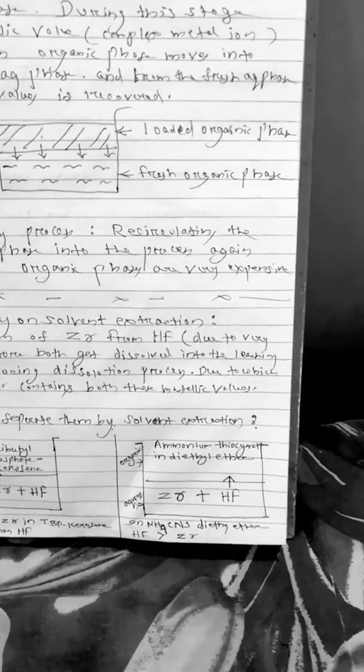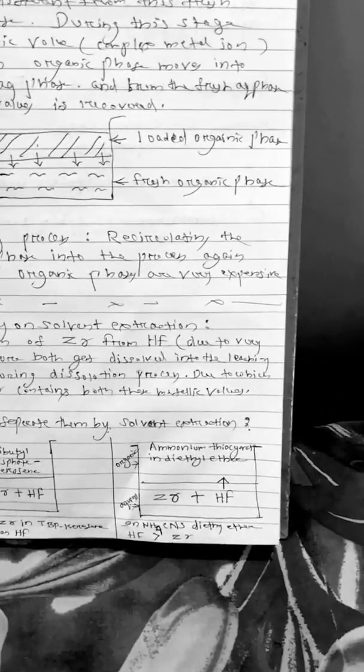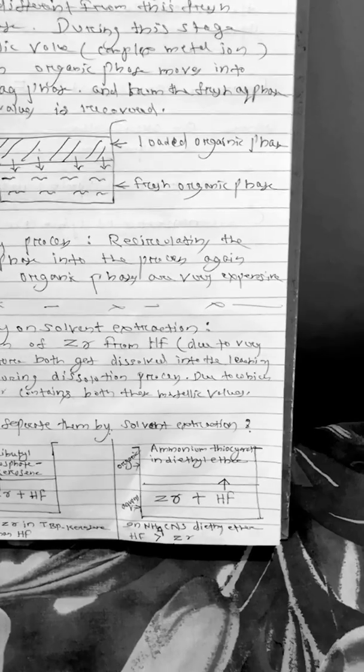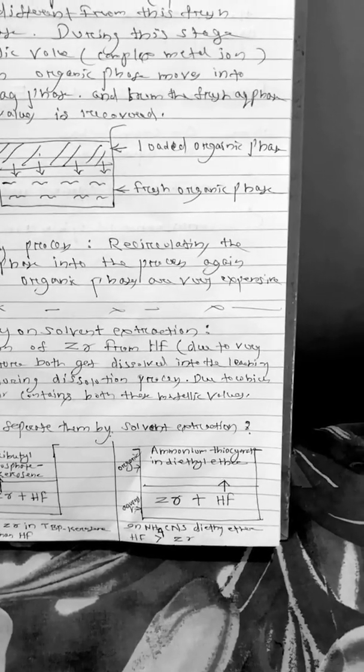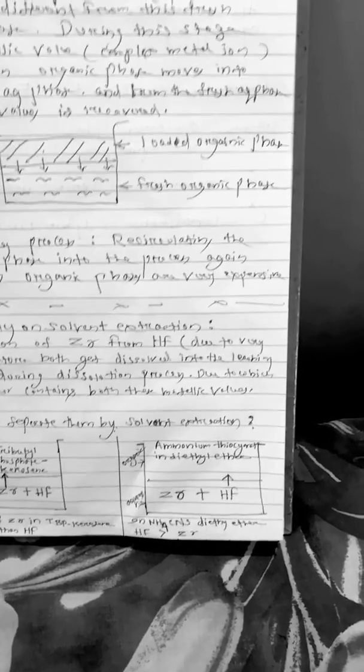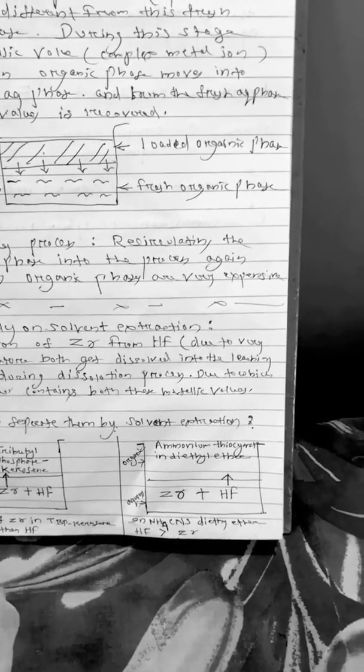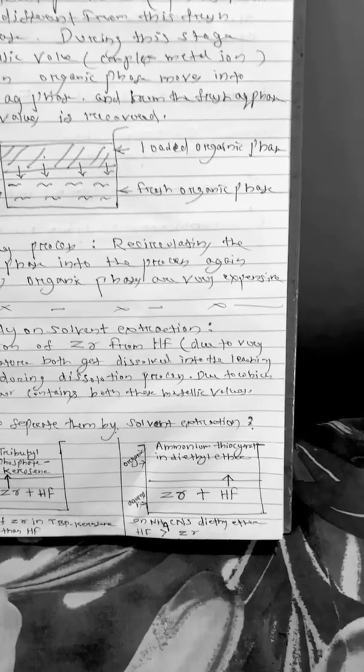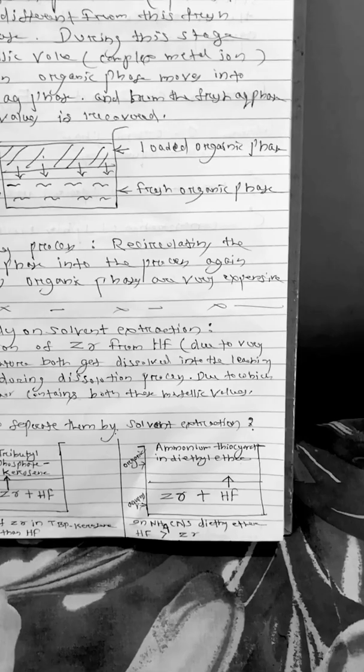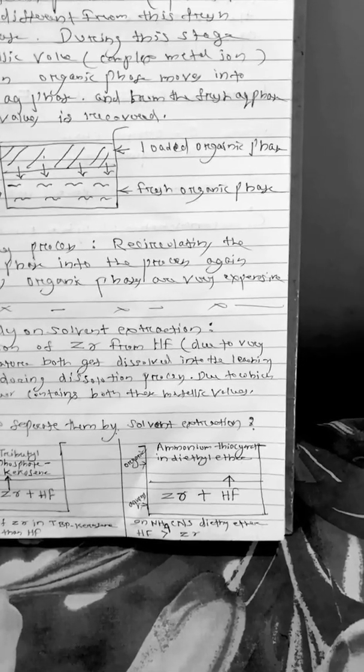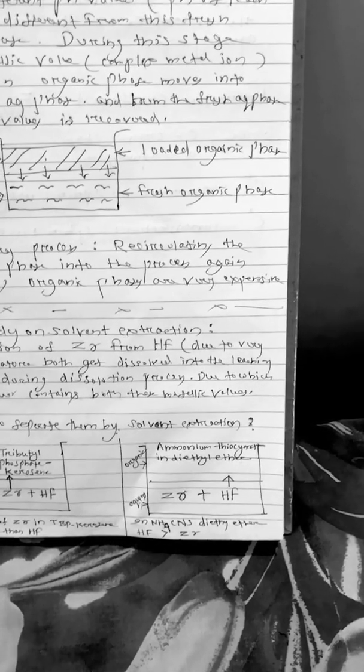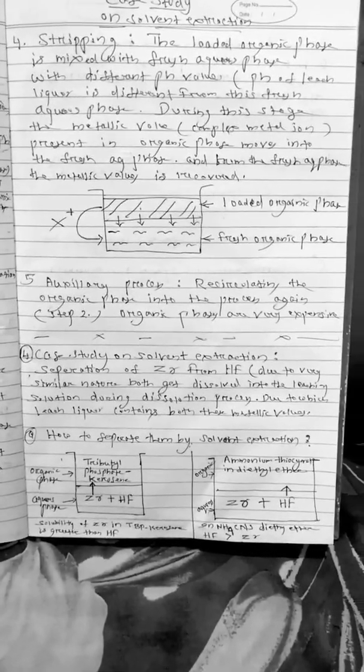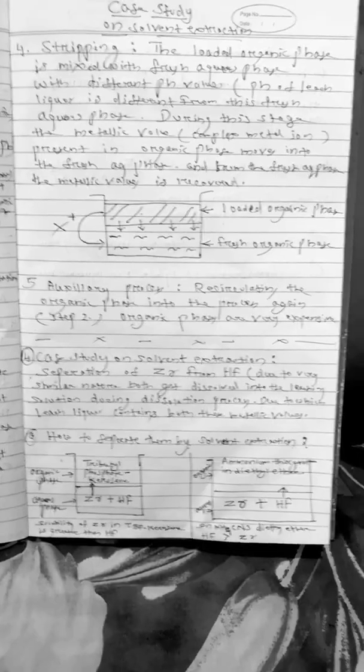Then in another case if we choose ammonium thiocyanate in diethyl ether as an organic phase and we add it to the aqueous phase containing zirconium and hafnium. Here hafnium has high solubility as compared to that of zirconium into this organic phase. So hafnium will migrate into this organic phase leaving behind zirconium. So selectivity of organic phase is very essential to do solvent extraction.